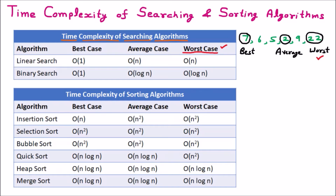Here we can see there are four columns: algorithm, best case complexity, average case, and worst case. Our main focus is on the worst case. Best case means on the very first go we find the element. For example, applying linear search and searching for element 7 — in one comparison we search that element — that's why Big O(1) is the best case complexity. Big O stands for less than or equal to, meaning the complexity will be approximately one comparison. The average case is O(n), meaning it can scan approximately n elements.